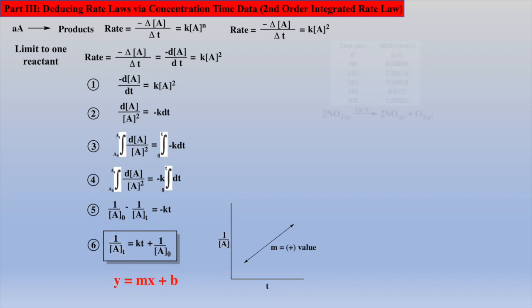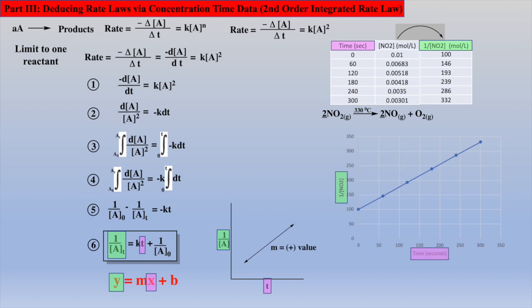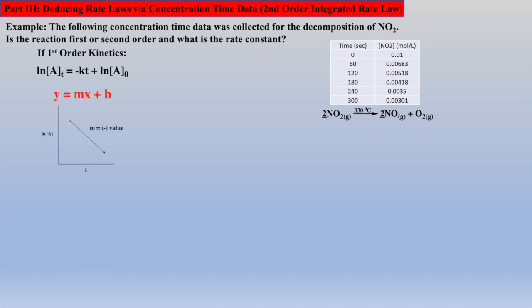Let's examine time concentration data for the decomposition of NO2. If we take the reciprocal of the concentrations and plot 1 over the concentrations versus time, we should generate a straight line if the reaction follows second-order kinetics. In this example problem, we are asked to prove if this reaction follows first- or second-order kinetics, and what is the rate constant. In the previous video, we learned that if a reaction follows first-order kinetics, then it should give a straight-line plot employing the integrated first-order rate law.